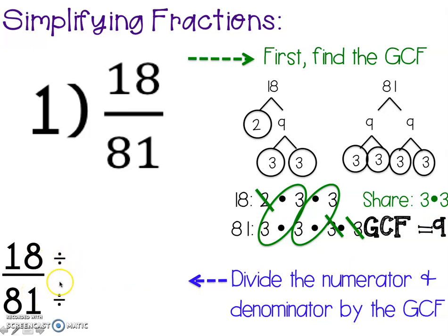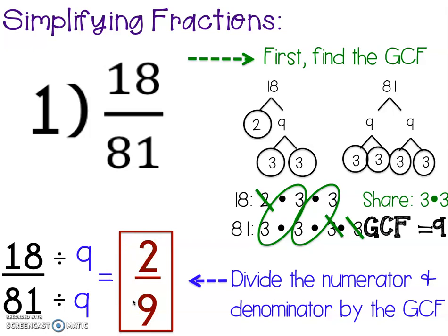we're going to divide both by 9. 18 divided by 9 gives me 2. 81 divided by 9 gives me 9. So 2 ninths is our simplified answer, and that's as far as it can go.